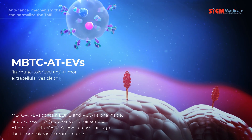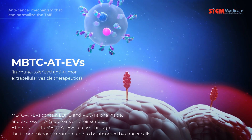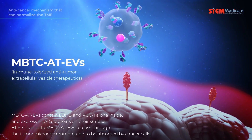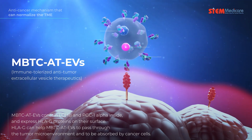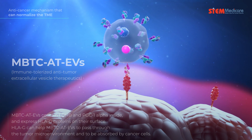MBTC-80-EVs contain LDHB and PGC-1-alpha inside, and express HLA-G proteins on their surface. HLA-G can help MBTC-80-EVs to pass through the tumor microenvironment and to be absorbed by cancer cells.